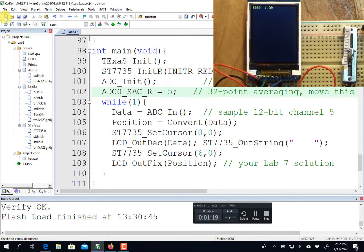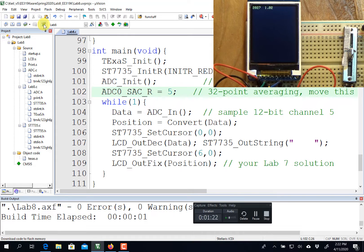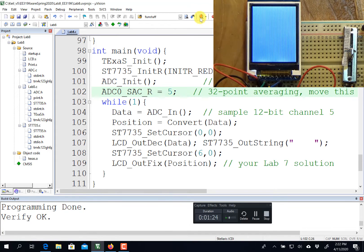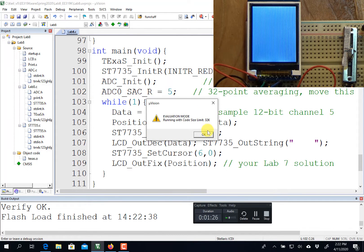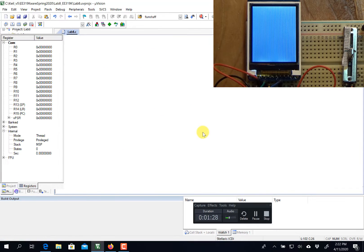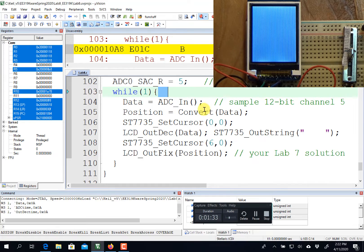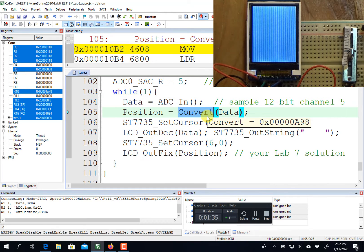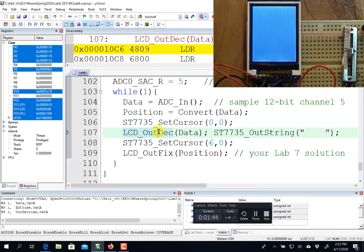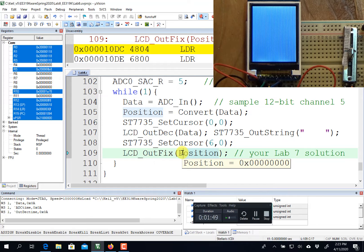We're going to build it, download it, and debug. What it will do is sample the A to D converter, use the function we did last time to convert A to D into the integer portion of the decimal fixed-point number, and then print out both the A to D conversion value and the number as a fixed-point value. You wrote both of these functions in lab 7.